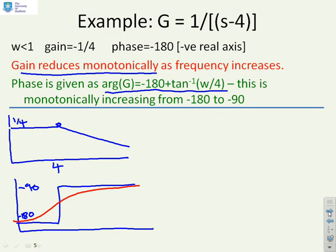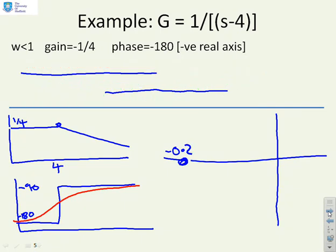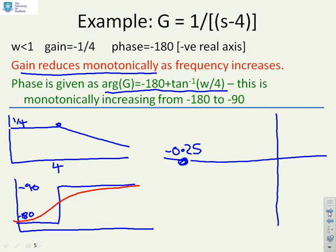If I put those two statements together, what do I get? The system started here minus 0.25, minus a quarter, and that's at minus 180 degrees. Then you'll notice the phase goes up, which means that we're moving in an anti-clockwise direction. The gain is going down, so we're always getting closer to the origin. We approach the origin in the minus 90 degree direction. You're going to end up with a plot something along these lines here.